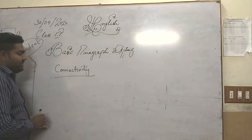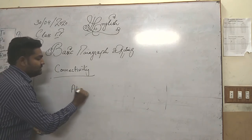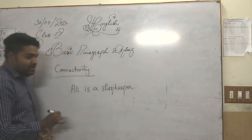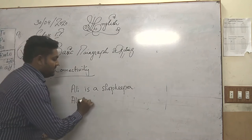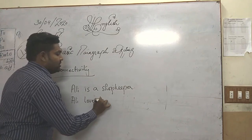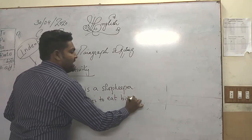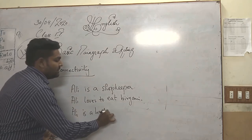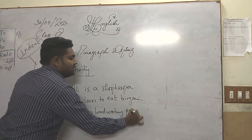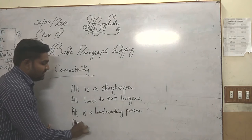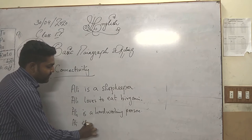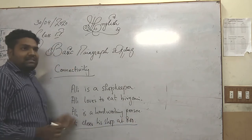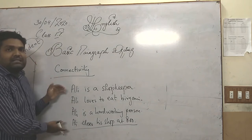What is connectivity? Let me give you an example. Ali is a shopkeeper. Ali loves to eat biryani. Third sentence: Ali is a hard-working person. And the fourth sentence is: Ali closes his shop at eight.